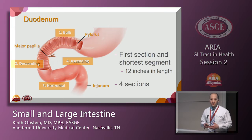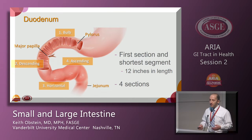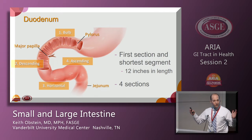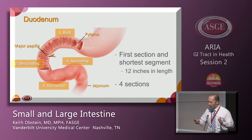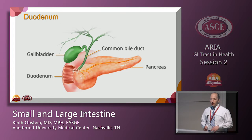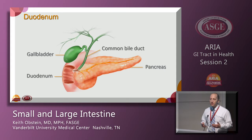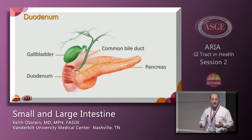This section of the duodenum is about one foot in length, so in that huge realm of 20 to 25 feet, this is a really small part. The second portion is typically where you have your papilla or ampulla, and that's where the common bile duct and pancreatic ducts come in.